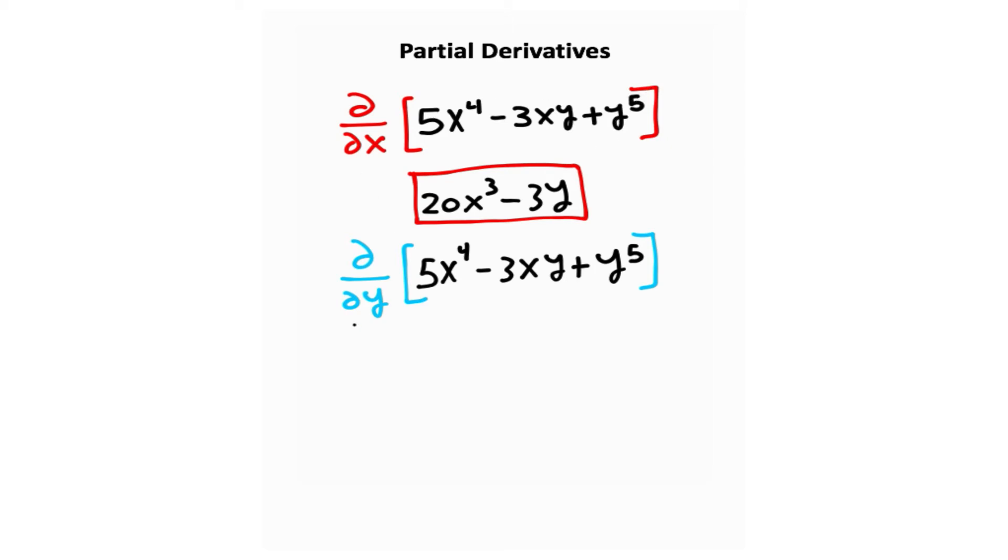But now we want to take the derivative with respect to y. So now we're going to treat x like it's constant. So in this case, you're going to use the power rule here. Notice that this 5x to the fourth becomes zero because we only have x terms here. We don't have any y terms. So that's just an entire constant number. And then from here, you can simplify down and you get that value right there. So that's the partial with respect to x and the partial with respect to y.